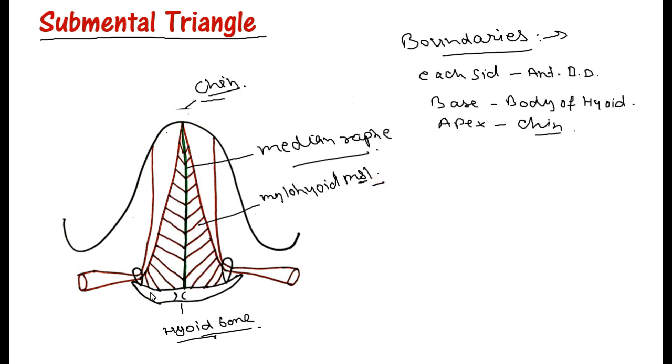These structures will form the floor of the triangle. The floor is formed by the mylohyoid muscles, right and left side, and the median raphe in the midline.